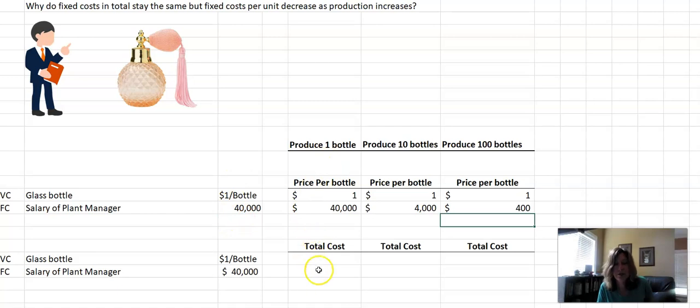So let's look at the total cost, which is how we normally think about it. Variable costs for $1, if you produce one, would be $1. If you produce 10 bottles, then you've got 1 times 10, which is $10. And if you produce 100 bottles, then you have 1 times 100, or $100. But the plant salary total cost is $40,000.